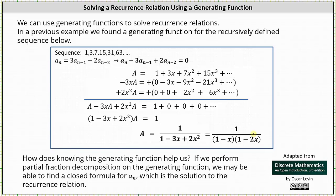So the question is: how does knowing the generating function help us solve the recurrence relation? If we could perform partial fraction decomposition on the generating function, we may be able to find a closed formula for a_n, which is the solution to the recurrence relation.